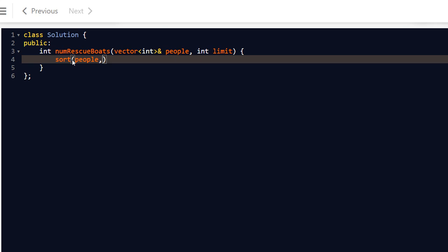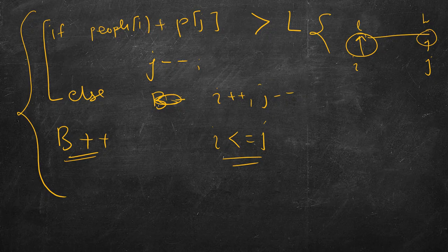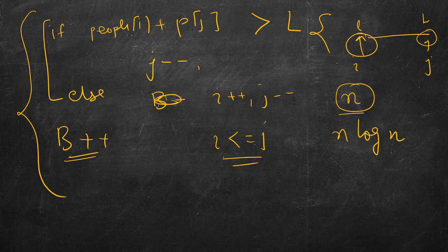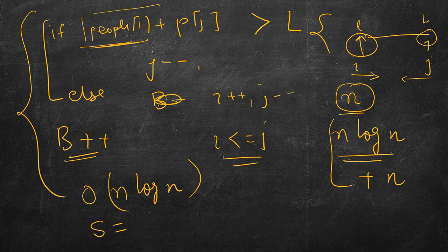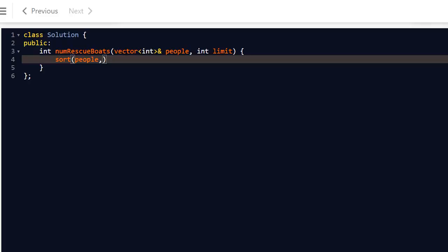The time complexity: sorting the list of N people takes O(N log N). Then we iterate through the list once — i moves forward and j moves backward, stopping when they cross — so another O(N). Total time complexity is O(N log N). For space, if we sort in place without creating a new list, and use only a few pointer variables, the space complexity is O(1).